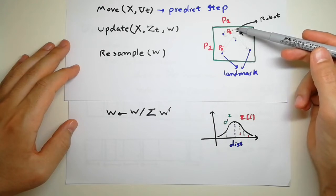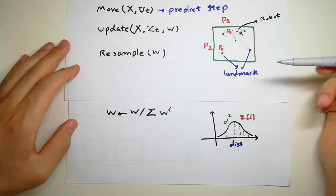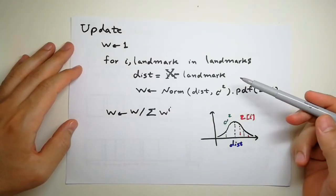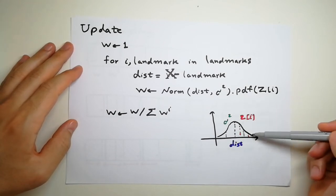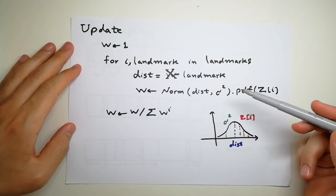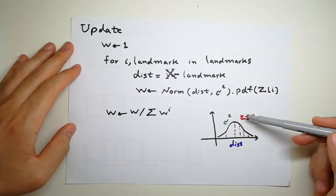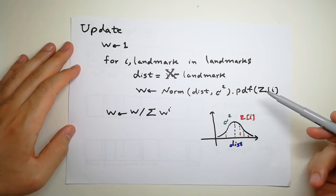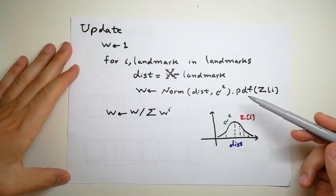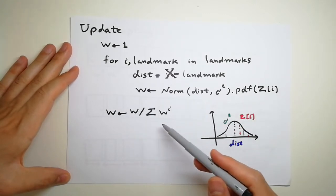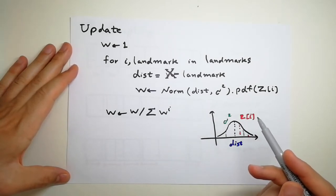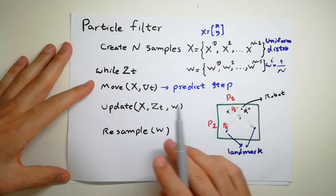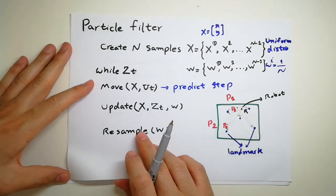For every particle and every landmark, we multiply the weights obtained from the first, second, third, and fourth landmarks together to get a single weight W for every particle. We use the PDF of the Gaussian distribution with the uncertainty, the computed distance, and the real measurement for each landmark. We multiply across all landmarks, and then normalize — we sum all weights up and divide each by the total sum. After this step, those particles like P1 that were closer to the real robot state have a bigger weight compared to P2.